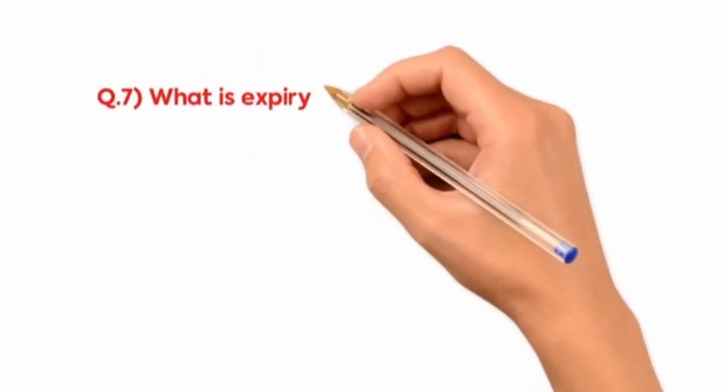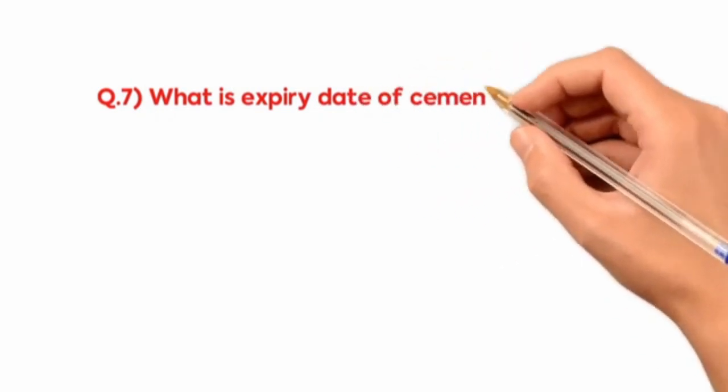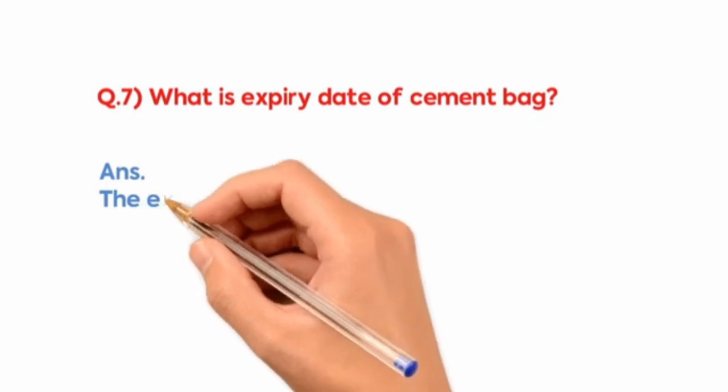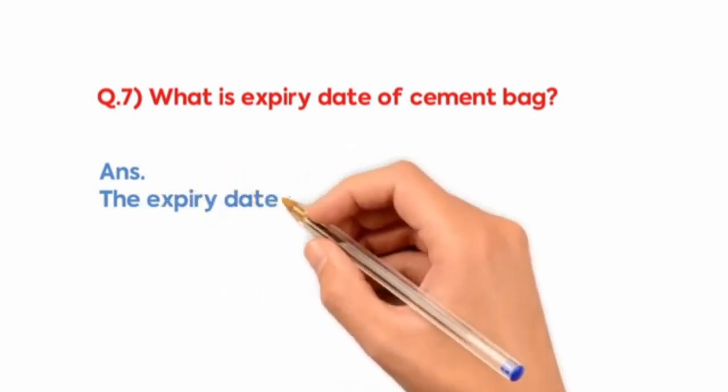What is expiry date of cement pack? The expiry date of cement bag is three months.